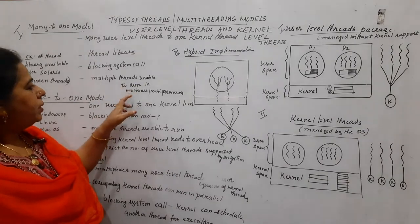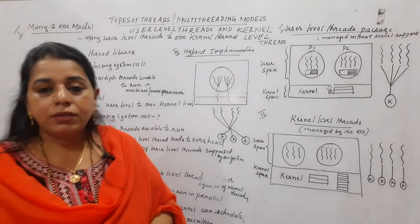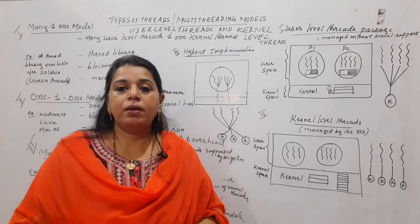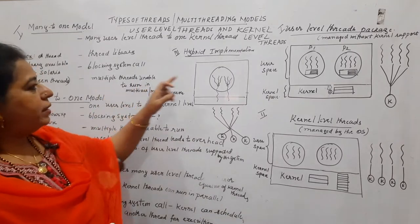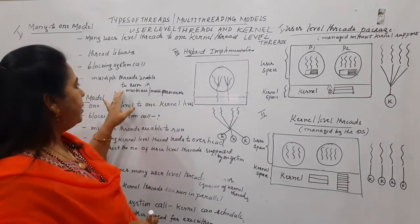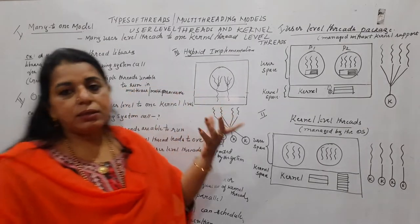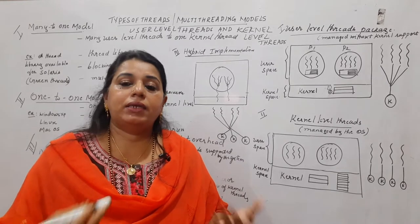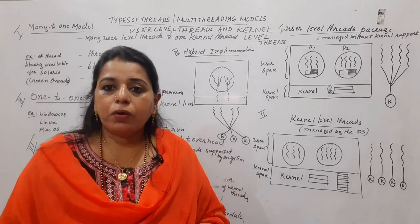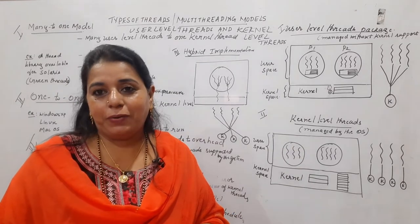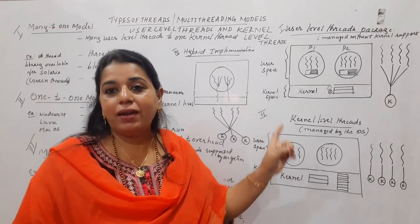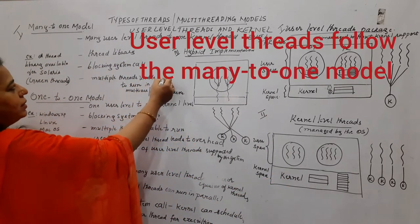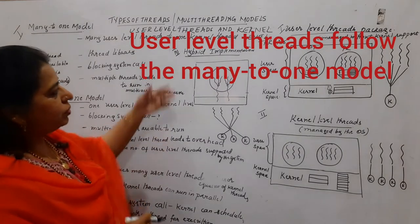Multiple threads are unable to run in a multi-core or multi-processor system — this is another limitation of the many-to-one model. Even though multiple user threads are created, since they are all mapped to one kernel thread, the other threads cannot execute even if the system has multiple processors or multiple cores. This is also a disadvantage of this model.